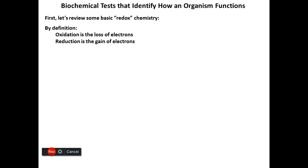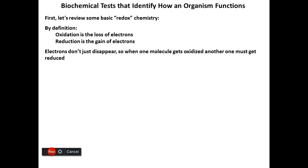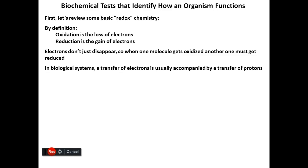Redox reactions are oxidation — the loss of electrons — and reduction — the gain of electrons. So some molecule loses electrons, the other one gains them. A saying I learned long ago is OIL RIG: O for oxidation, L for loss — oxidation is the loss; RIG — reduction is the gain of electrons. The electrons don't disappear, they're just moving from one place to another. So if somebody's oxidized, someone else is reduced.